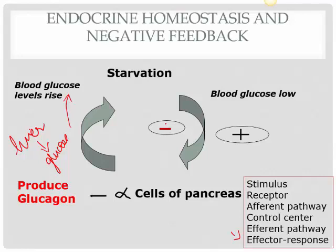Negative feedback happens very often with the endocrine system. For example, if your basal metabolism is very low, the thyroid gland is stimulated, you produce a hormone, your metabolism picks up, body temperature and everything comes to normal, and then the gland is switched off. This negative feedback mechanism happens all the time in your body.